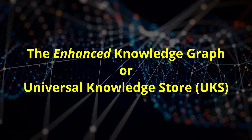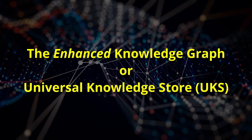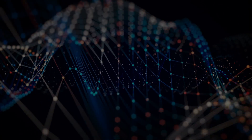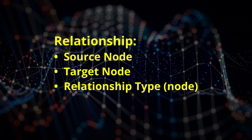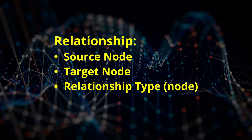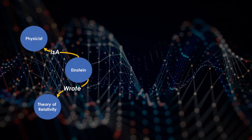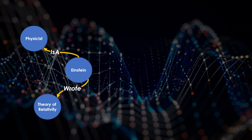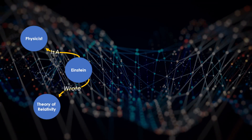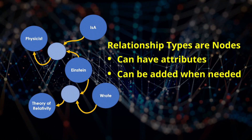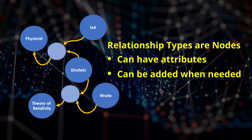Let's look at the features the Enhanced Knowledge Graph brings to the table. Any relationship has three components: a source node, a target node, and a relationship type. Unique to this approach, relationship types are nodes too — thus they can have attributes, and new relationship types can be added whenever needed.